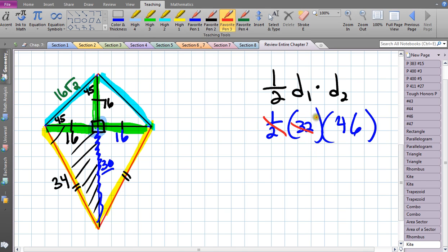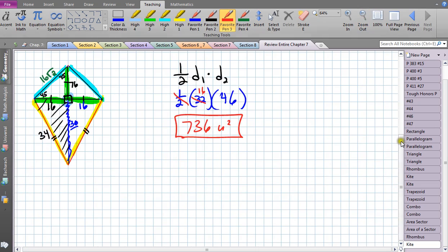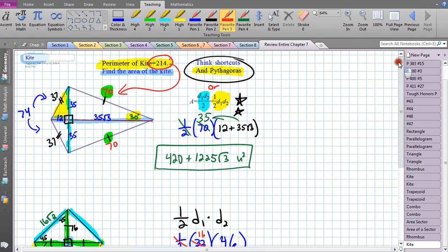All together I'm going to go half of 32, which is 16. Check out my calculator - 16 times 46, that is 736 units squared.